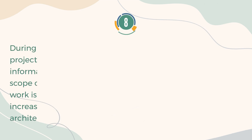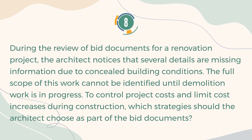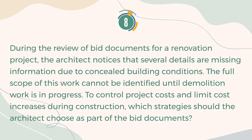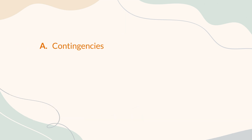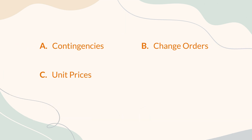Number 8. During the review of bid documents for a renovation project, the architect notices that several details are missing information due to concealed building conditions. The full scope of this work cannot be identified until demolition work is in progress. To control project costs and limit cost increases during construction, which strategies should the architect choose as part of the bid documents? A. Contingencies. B. Change orders. C. Unit prices. D. Addenda.